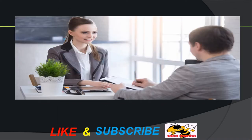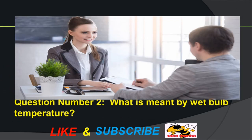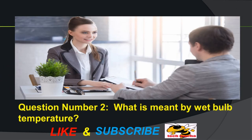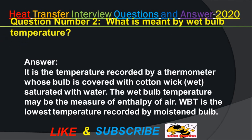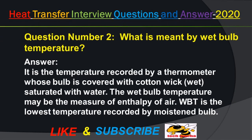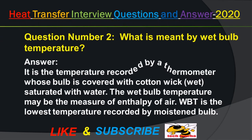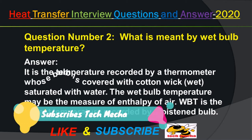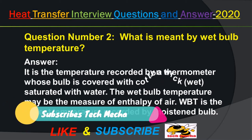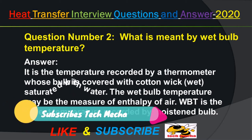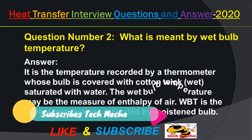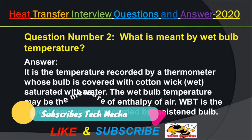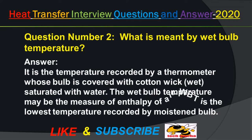Question number 2: What is meant by wet bulb temperature? Answer: It is the temperature recorded by a thermometer whose bulb is covered with cotton wicks saturated with water.